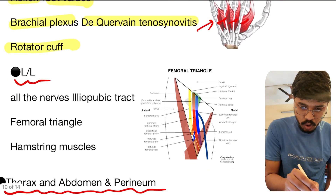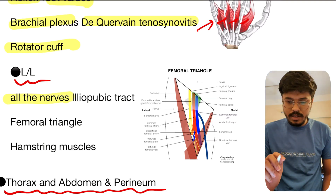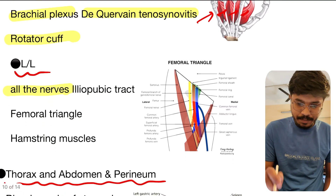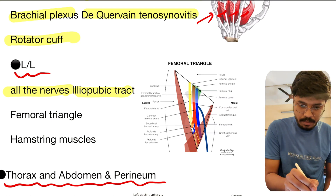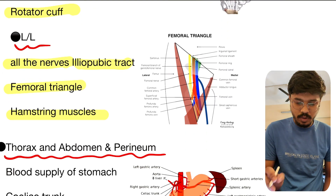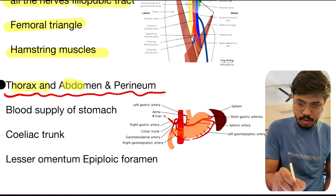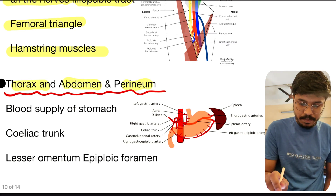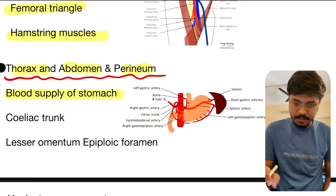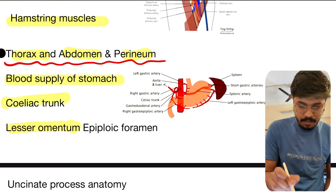From the lower limb, all the nerves are again important. Great saphenous vein, short saphenous vein are important. Iliotibial tract, femoral triangle, and hamstring muscles are key topics. From thorax, abdomen, and perineum: blood supply of the stomach is extremely important — celiac trunk, lesser omentum.